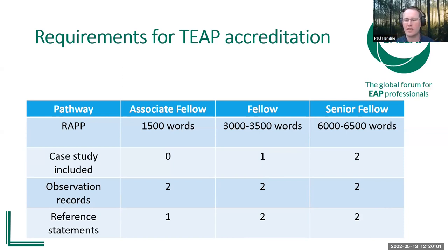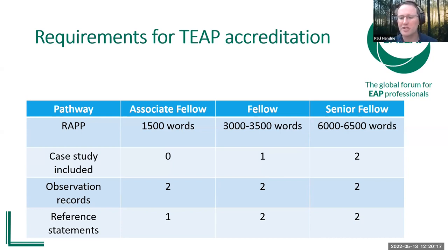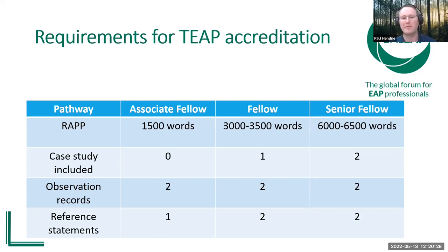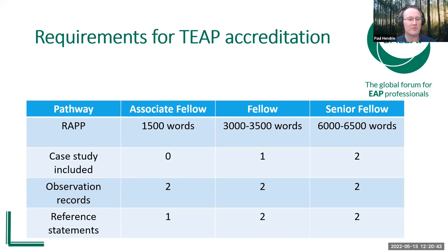Teaching is the core of the portfolio — your competence as a teacher. It is TEEP, and that T is the giveaway. Observation records are necessary for each level. One observation can be conducted by any competent practitioner within your centre or even outside — you might exchange a peer observation with someone from another institution. Another observation has to be done by a TEEP observer, which at the moment is an assessor or mentor, though we are looking at ways to broaden who is recognised as able to conduct the formal TEEP observation.